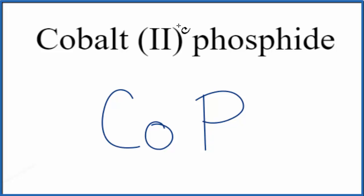So for cobalt, it's a transition metal, and the 2 tells us the charge. So we can just put a 2+ up here for cobalt.